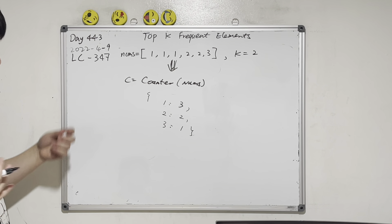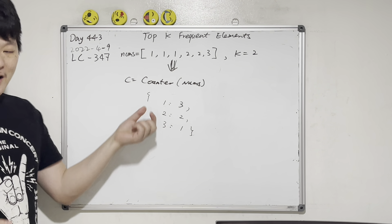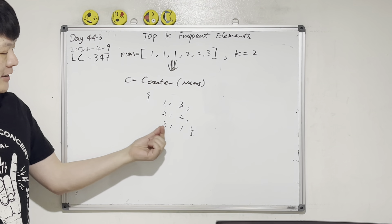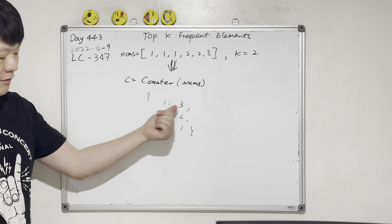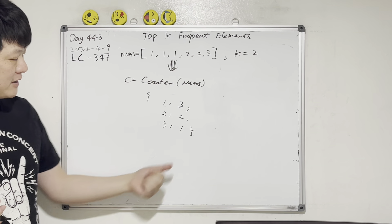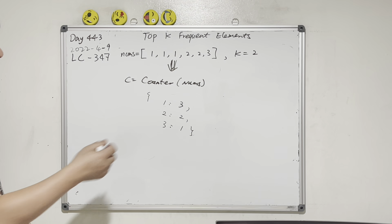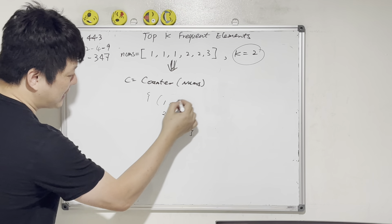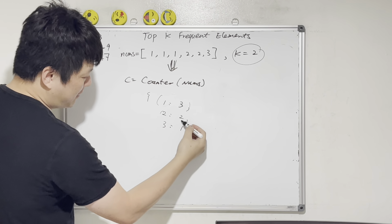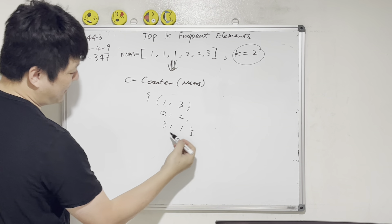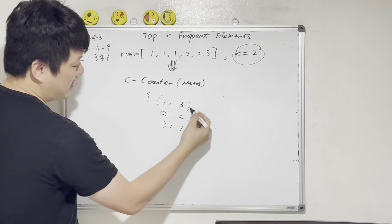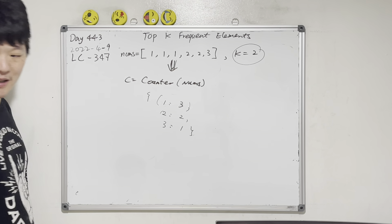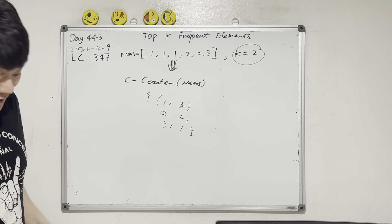Counter is like a wrapper for a dictionary, so it gives us a dictionary which has the keys and the values — the values will be the frequency. We want to sort these items by the values: 3, 2, 1. So the top two are 1 and 2, and the order doesn't matter.